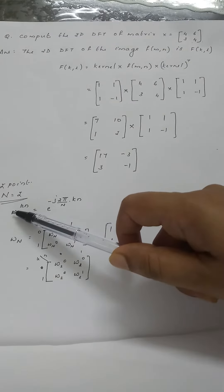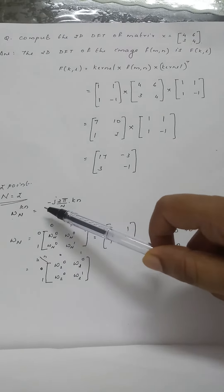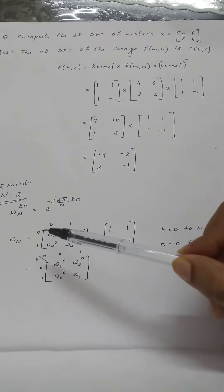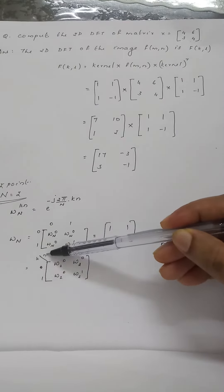We have the equation omega_n raised to kn, which equals e raised to minus j 2π kn/n. Here n equals 2 because it is two-point, and this 2D matrix is represented by omega_n with indices k and n.